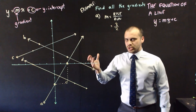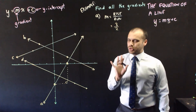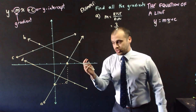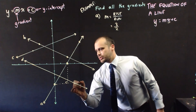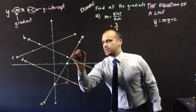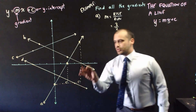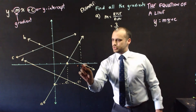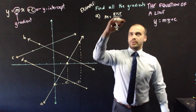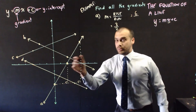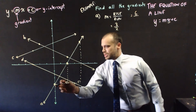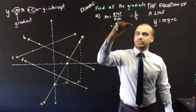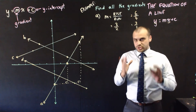I want to show you that it doesn't matter what points you choose. If I picked a point over here and drew a bigger triangle — all the way across and all the way up — the gradient equals rise over run. We went 6 up and 4 across: 6 over 4, which simplifies to 3 over 2. The points that you choose don't matter — just choose points that you like.